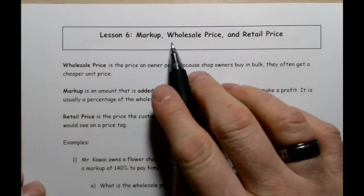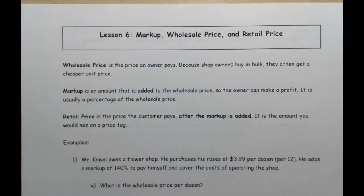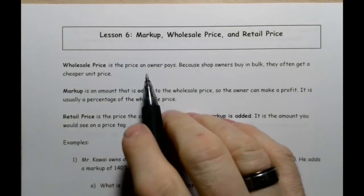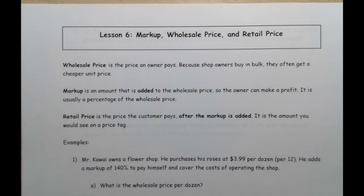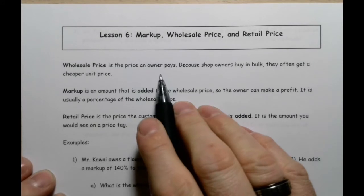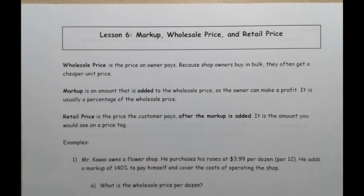In this lesson, we're going to take a look at markup, wholesale price, and retail price. When you go into a store, there's a lot going on behind the scenes with the things you buy. The owner of that store has to buy the products that they sell from somebody else. What they pay is called the wholesale price. So let's say you go to a toy store. The owner has purchased the toys from some sort of wholesaler. Whatever price they pay, that's the wholesale price.